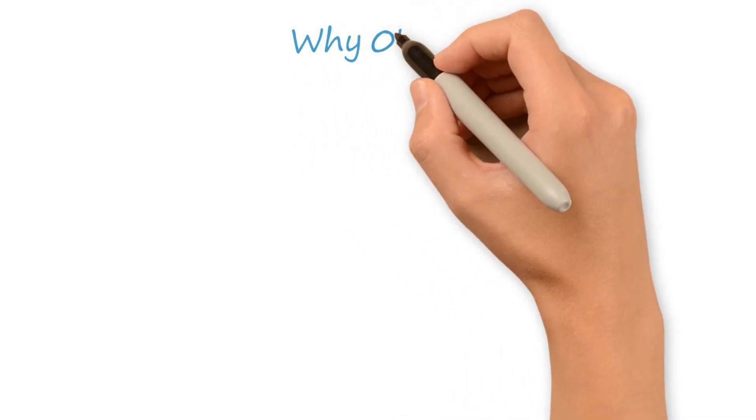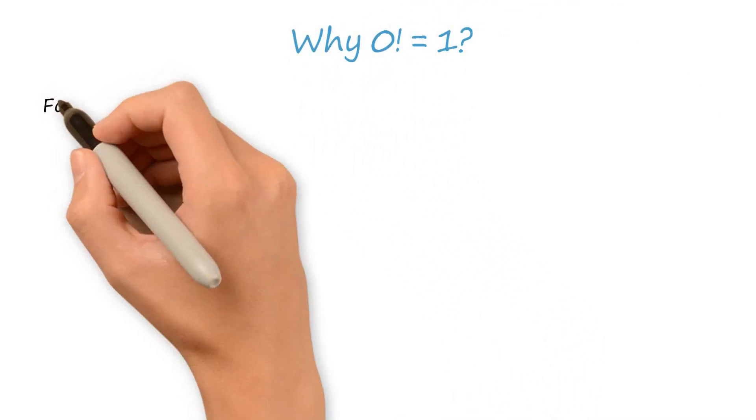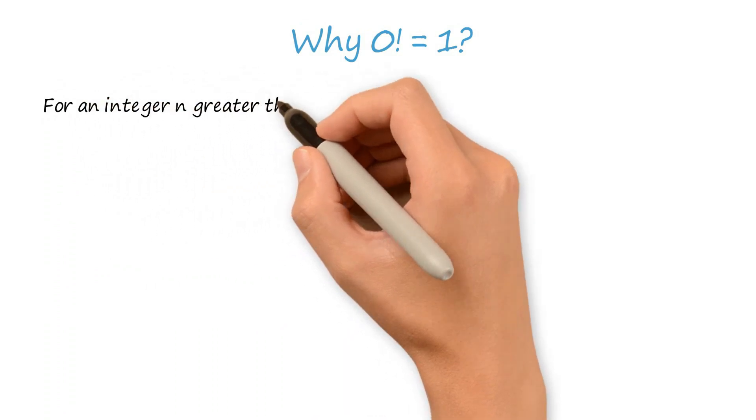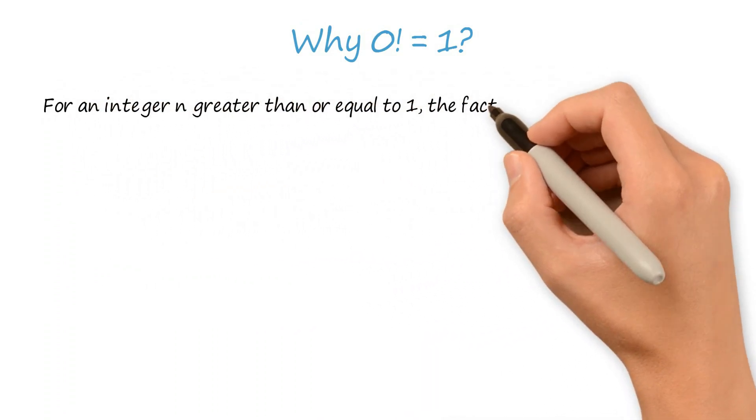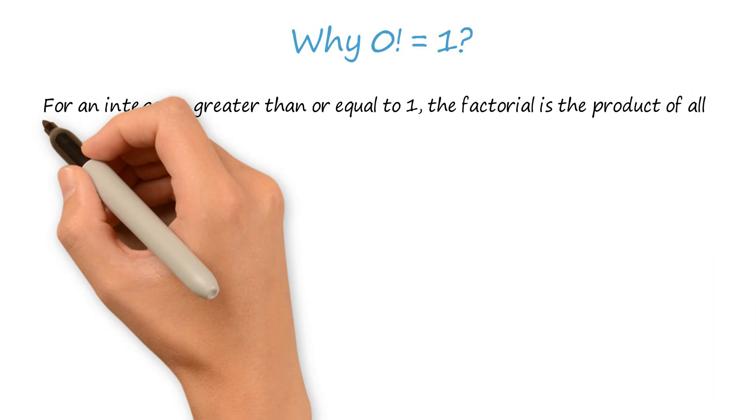Why does 0 factorial equal 1? For an integer n greater than or equal to 1, the factorial is the product of all integers from n down to 1.